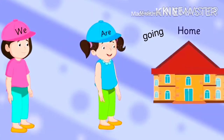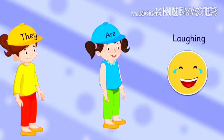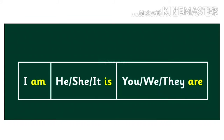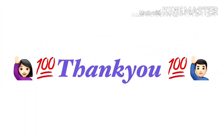We are going home. They are laughing. Now let us revise what we have learned today. The word 'am' is used with I. The word 'is' is used with he, she, and it. The word 'are' is used with you, we, and they. I hope you will remember today's learning and use it in sentences correctly. Thank you and keep studying.